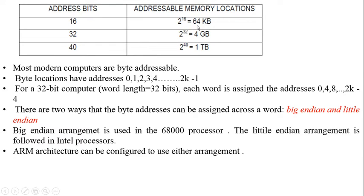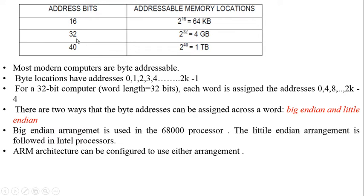For example, if the memory capacity is 64 KB — which equals 2^16 — we need a minimum of 16 address bits to uniquely address each byte. Similarly, if the memory is 4 GB, which equals 2^32, we need a minimum of 32 address bits to uniquely address each byte.